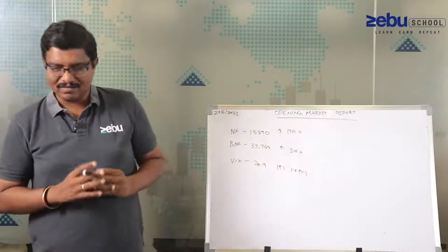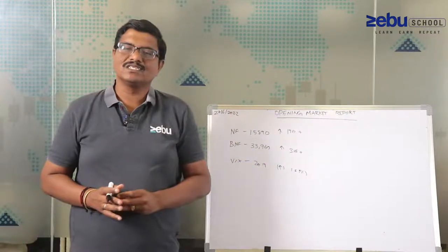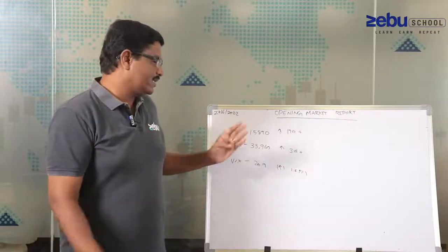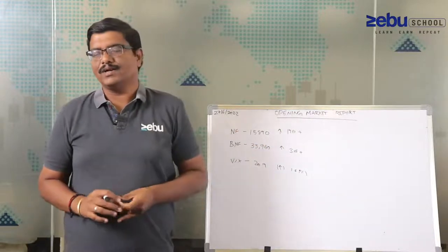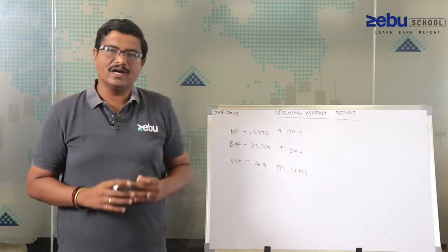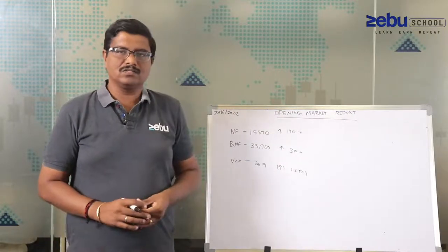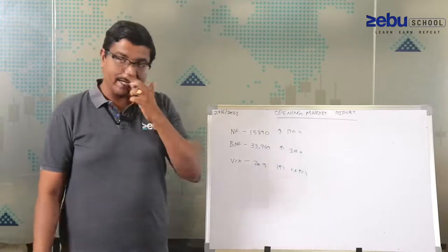Looking at where the market is exactly from Friday's close, seems like market is up. Nifty is at 15,890, so for the day 190 points up in the Nifty. Bank Nifty is almost 300 plus, trading around 33,950 zone.